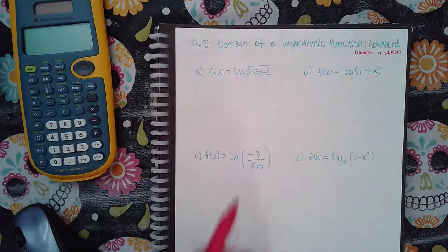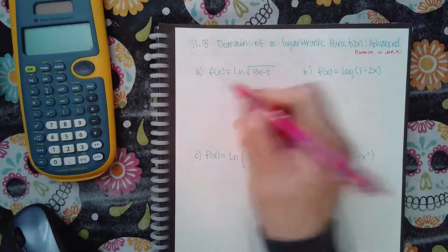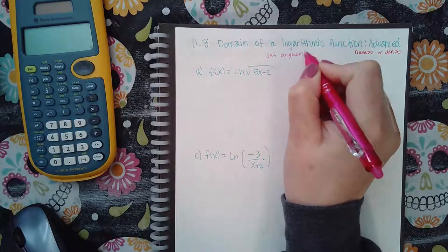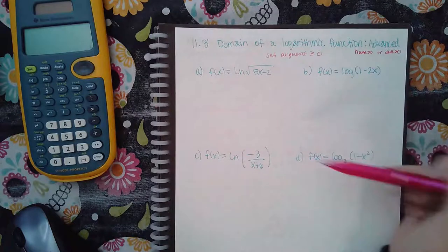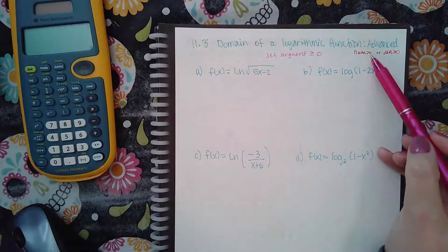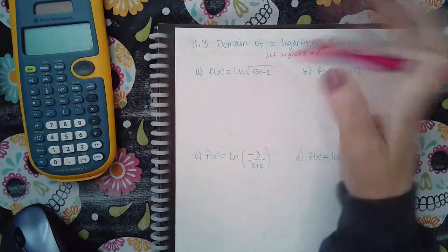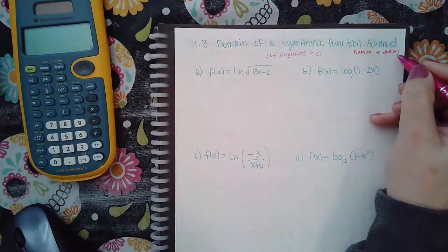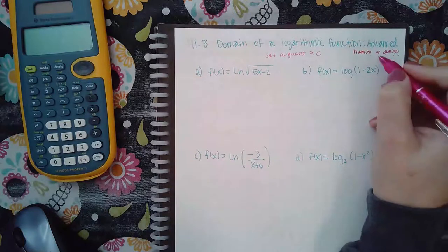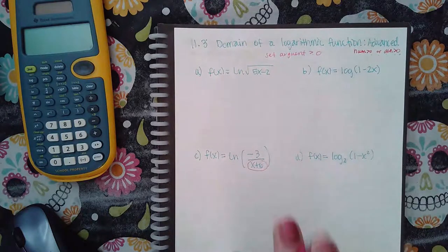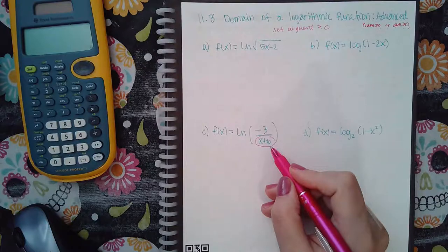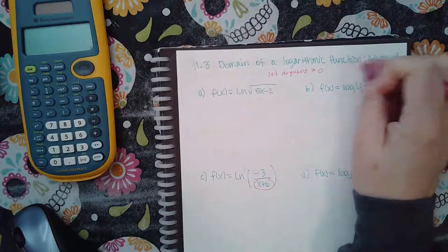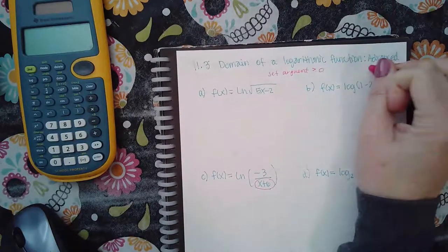Your argument must be positive. Basically, you're going to set your argument greater than zero. However, if you have a fraction, you need to set the numerator greater than zero — not equal, because you can't equal the asymptote — or the denominator greater than zero depending on where the variable is. The fraction is a special case and we'll talk about that when we get to that problem.